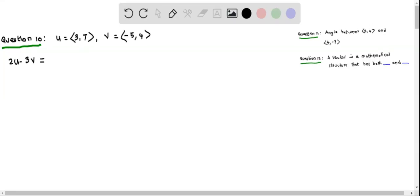Let us do question 10 now. We are given the vectors u = <3, 7> and v = <-5, 4>. Let us find 2u - 3v.